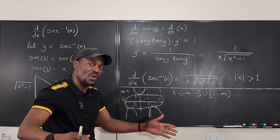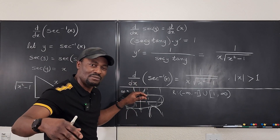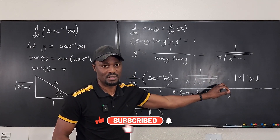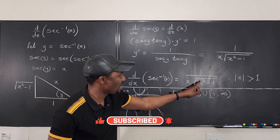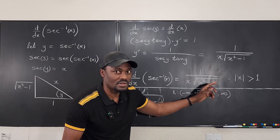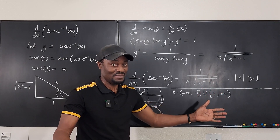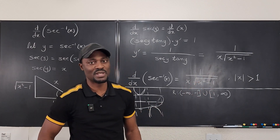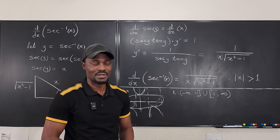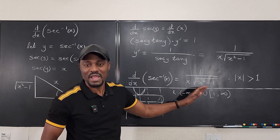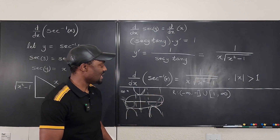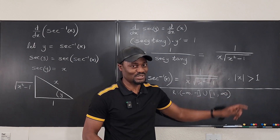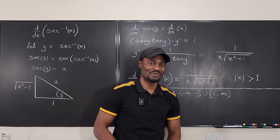You must avoid numbers close to zero — inputs have to be beyond one in absolute value before you can plug them in. For example, trying to use x = one half doesn't work: one half squared is one fourth, one fourth minus one is negative three fourths, and you can't find a real square root of that. That's the full explanation for why the condition absolute value of x greater than one must be written alongside the derivative. See you in the next video — never stop learning!